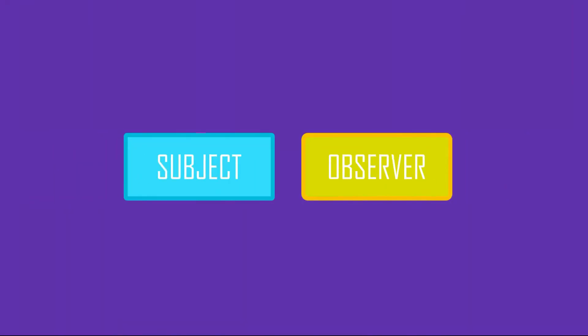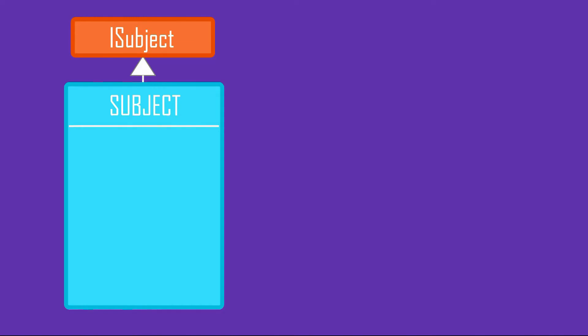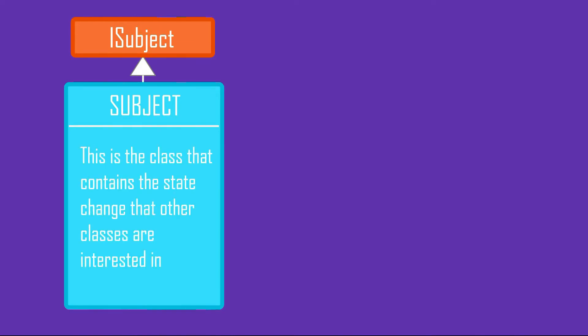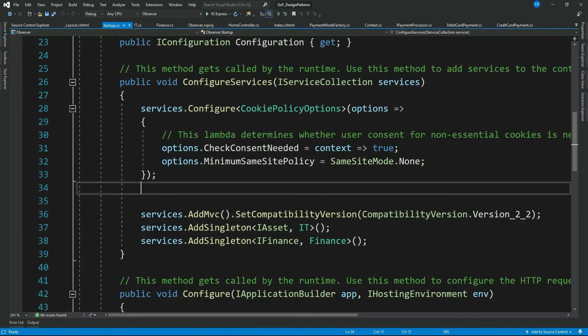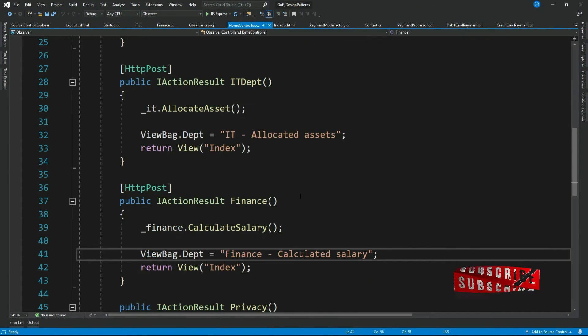How does the Observer Pattern work? To understand it, you first need to understand the Subject and the Observer objects. There is something called Subject that implements an interface ISubject. This is the class associated with the event or state change that others are interested in. It must have code responsible for notifying all other classes interested in the state change of this object.